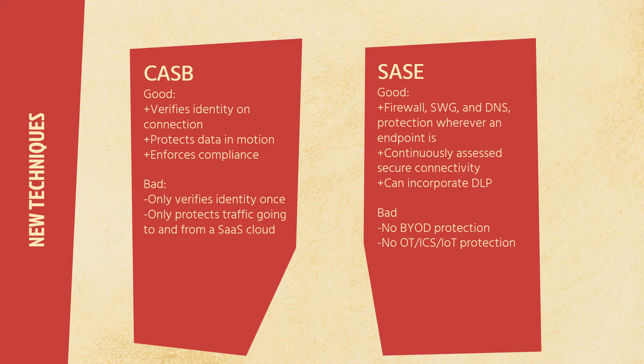The last technology we'll talk about today is SASE — secure access services edge. SASE is still kind of evening out from an industry perspective as to what exactly constitutes a SASE. The good things: you're going to have firewalls, web gateway, DNS filtering, and other protections wherever the endpoint is. Since it's on the endpoint itself, it can continuously assess security through that endpoint, and good ones can incorporate data loss protection. But it only protects clients on which it is installed — so no BYOD protection, no OT, ICS, or IoT headless protection.